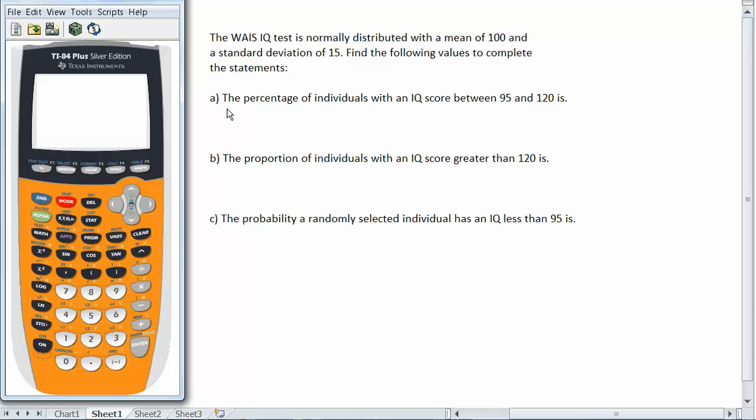A. The percentage of individuals with an IQ score between 95 and 120 is. B. The proportion of individuals with an IQ score greater than 120 is. And C. The probability a randomly selected individual has an IQ score less than 95 is.